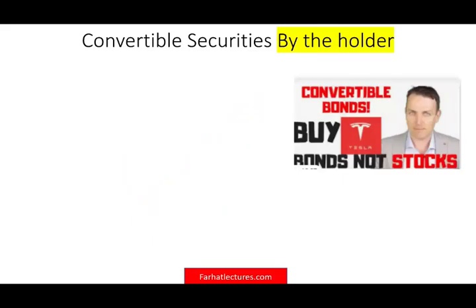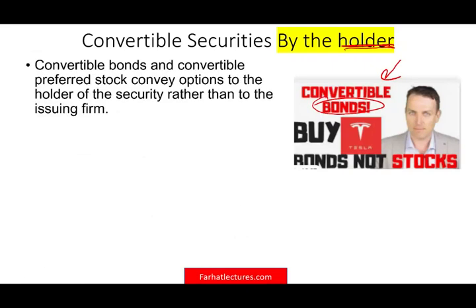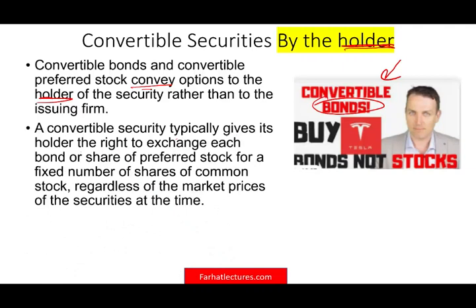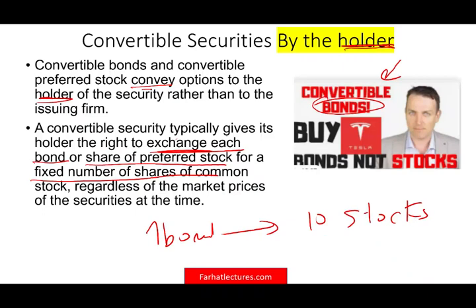Convertible securities are option-like securities, but they give the holder — not the company — the right to convert their bond or preferred stock. Companies like Tesla sell convertible bonds, telling you: we'll sell you the bond, but you can convert it into stock. Convertible bonds and convertible preferred stock convey options to the holder rather than the issuing firm. A convertible security typically gives the holder the right to exchange each bond or share of preferred stock for a fixed number of shares of common stock. You as the holder have the right to do so.